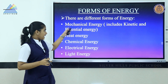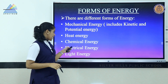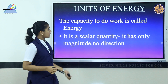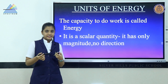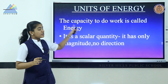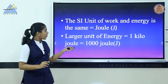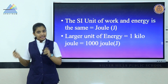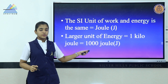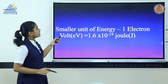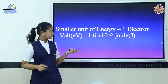There are different forms of energy: mechanical energy (which includes kinetic and potential energy), heat energy, chemical energy, electrical energy, light energy, and more. The capacity to do work is called energy. Energy is a scalar quantity — it has only magnitude, not direction. The SI unit of work and energy is the joule. One kilojoule equals 1000 joules, and one electron volt equals 1.6 × 10⁻¹⁹ joule.